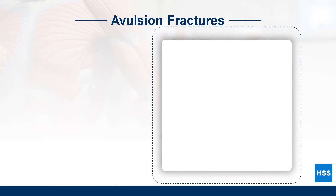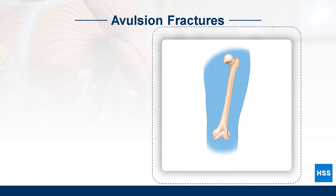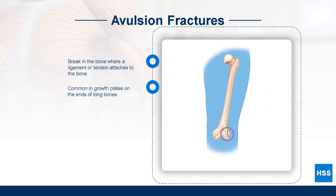Avulsion fractures are the result of a break in the bone near the end where a tendon or ligament attaches to the bone. Avulsion fractures are more common in children because of the growth plates found in the ends of long bones. These type of fractures may be the result of a forceful pull on the ligament or tendon while the bone moves in another direction.